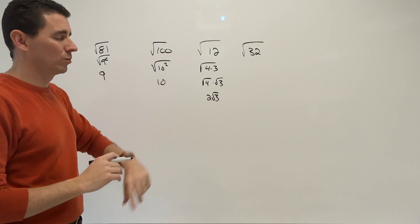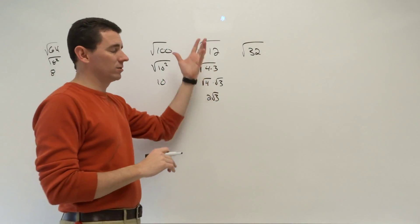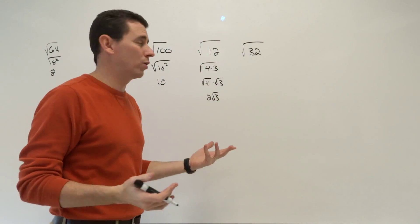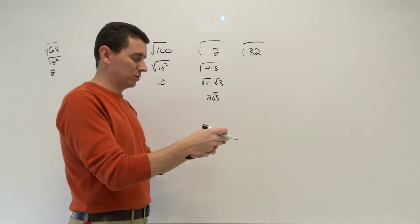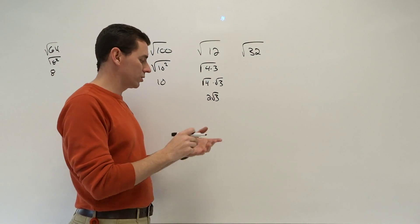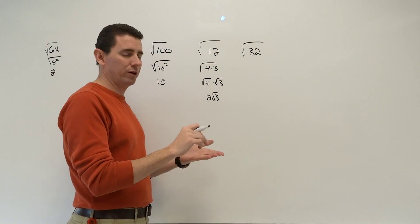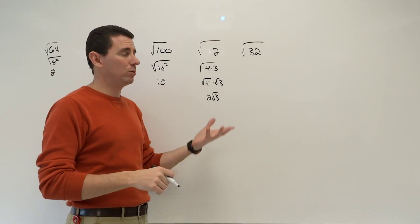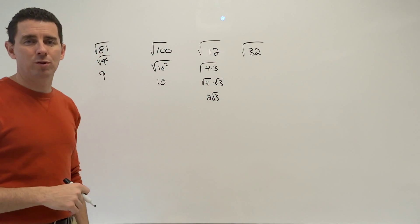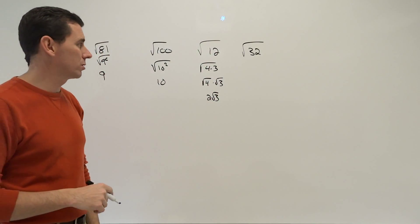An easy way to check your answer: if you're not sure they're equivalent, type in square root of 12 on your calculator and hit equals. Then type 2 root 3 and hit equals. You should get the same decimal equivalent, or else you made an error.